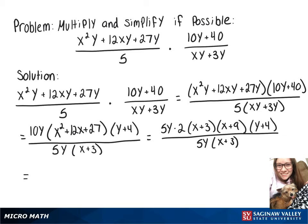We can rewrite this as 5y over 5y times x plus 3 over x plus 3 times 2 times x plus 9 times y plus 4. And now these will cancel out.